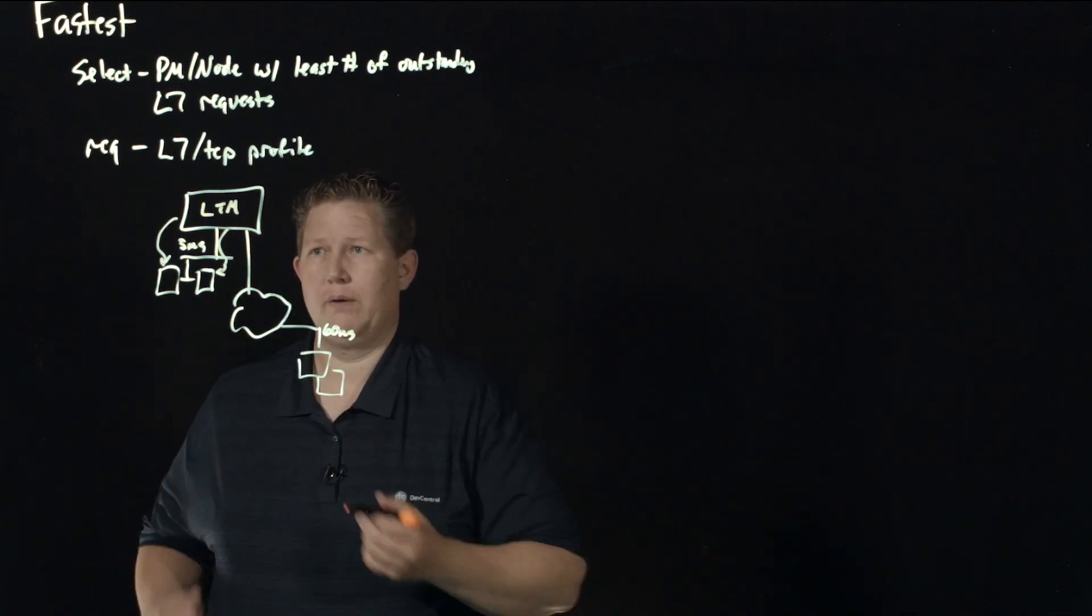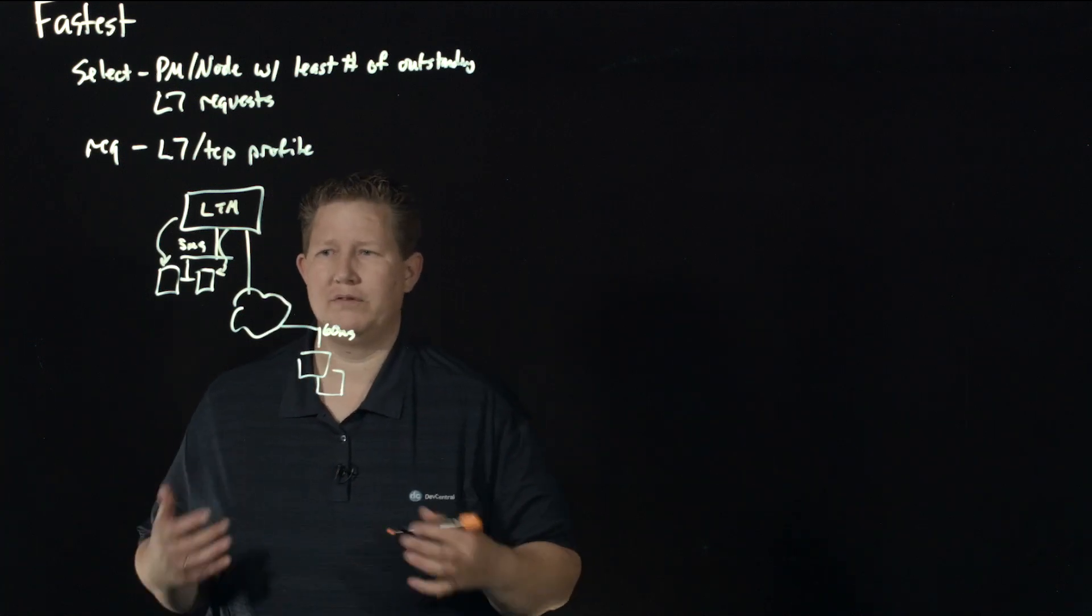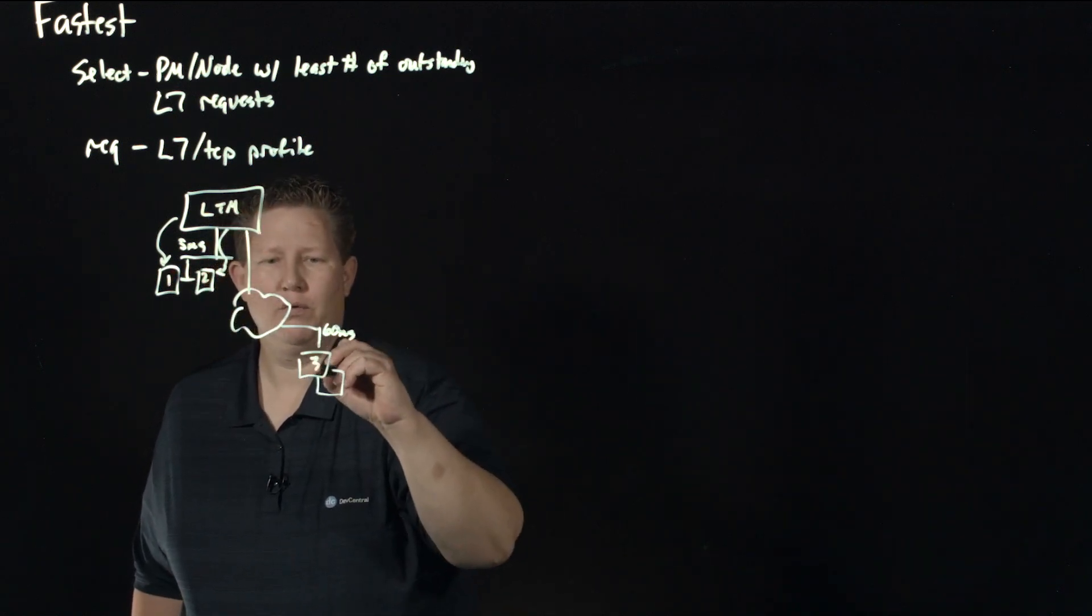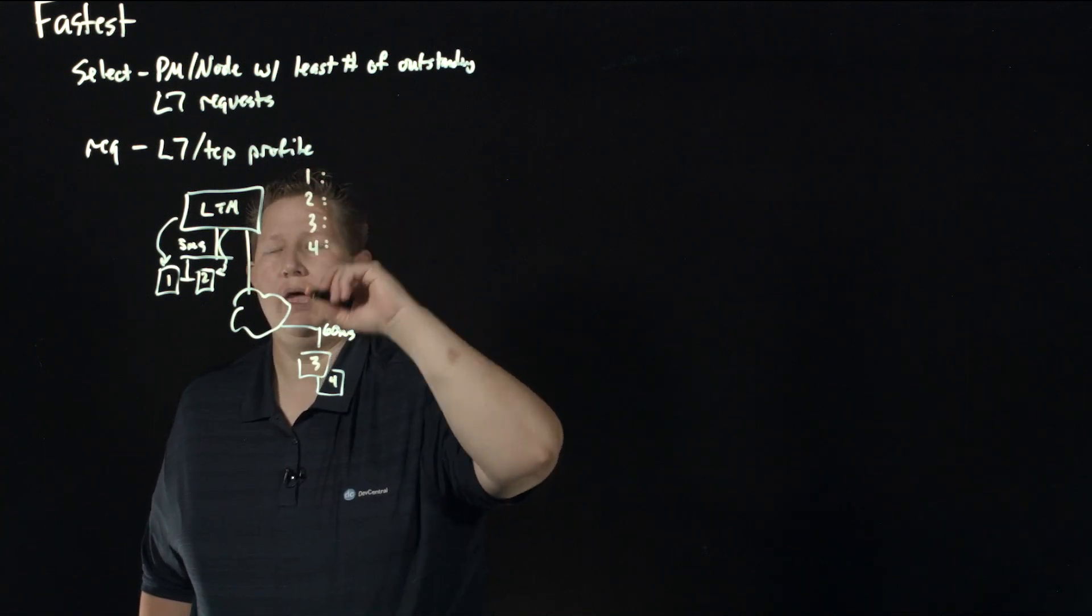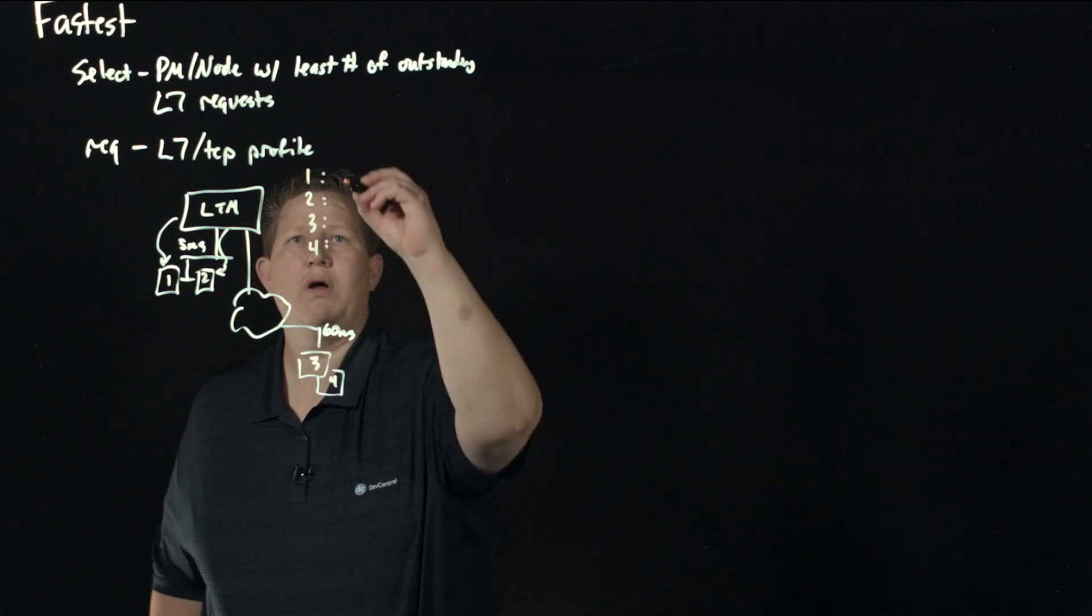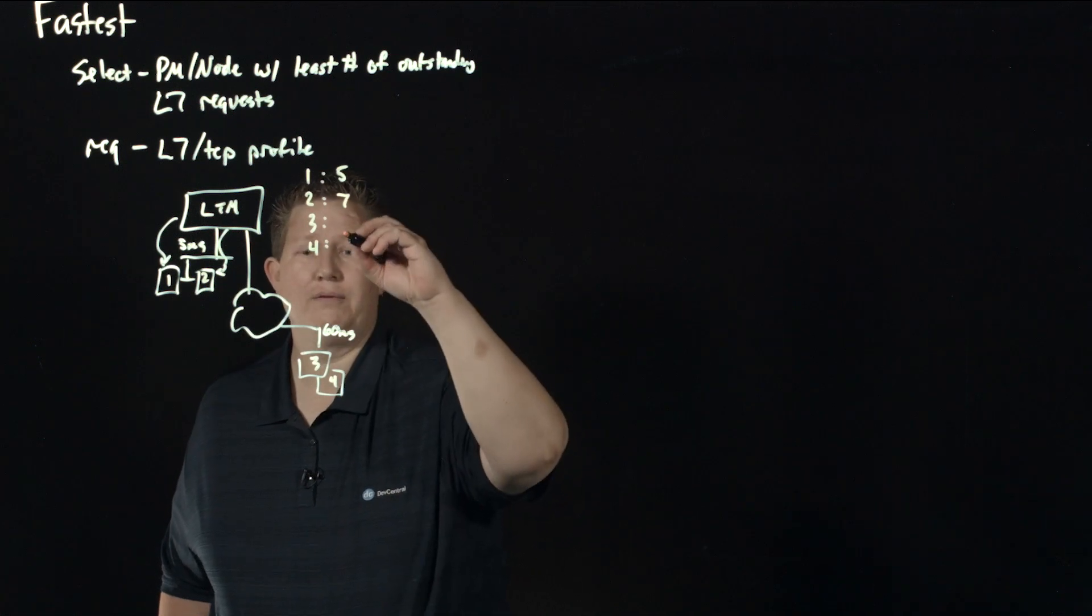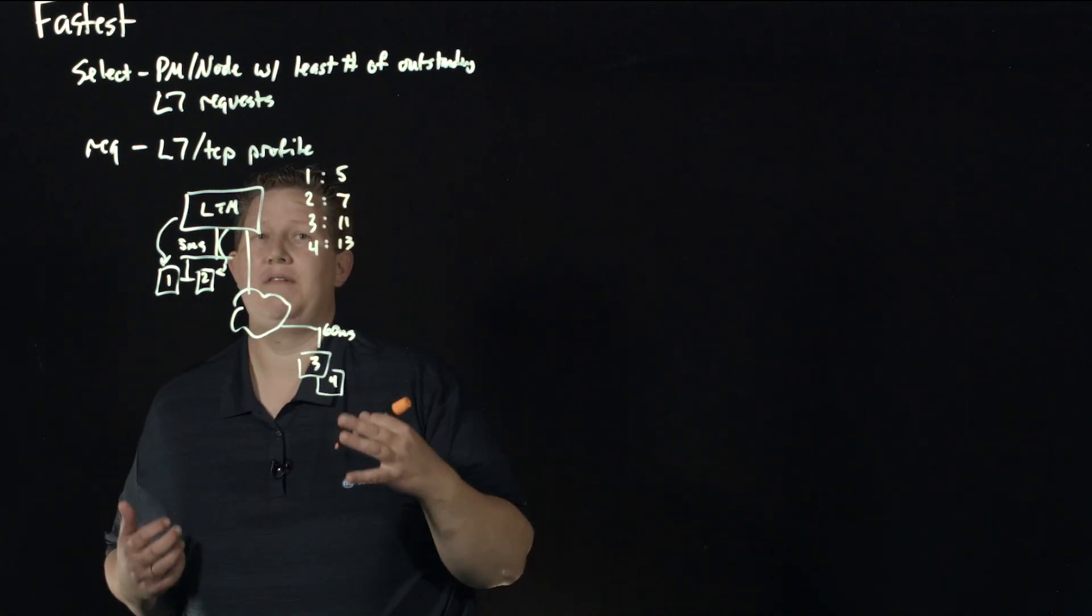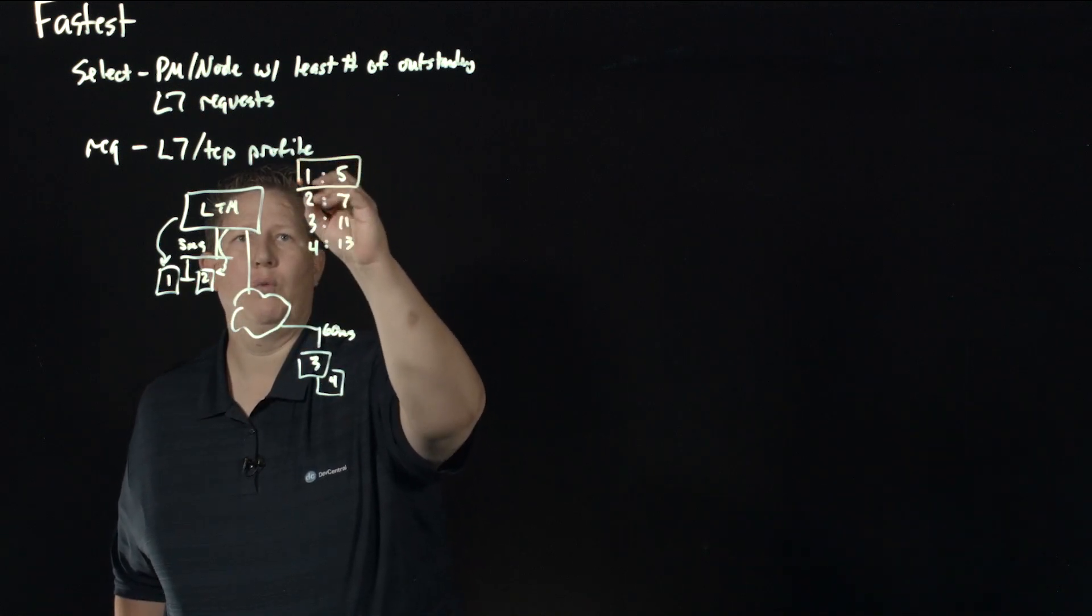The LTM is keeping a counter for each one of these pool members or nodes. If I have a counter for these four systems and server one has an outstanding counter of five, server two has seven, and then three and four maybe have eleven and thirteen outstanding.